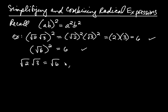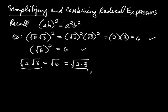Now, the square root of 6 — the 6 itself is 2 times 3. I'd like you to compare this with that. How are those different? Well, over here, you basically took the radicands and multiplied them together, and then took the radical of that. So this illustrates what's called the product rule.